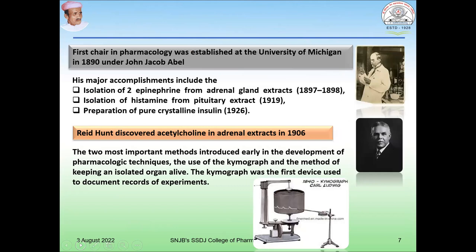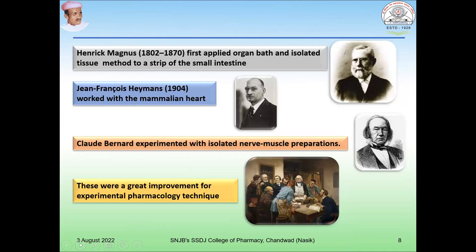The first chair in pharmacology was established at the University of Michigan in 1890 under John Jacob Abel. His major accomplishments include the isolation of epinephrine from adrenal gland extracts, isolation of histamine from pituitary extract, and preparation of pure crystalline insulin. Reid Hunt discovered acetylcholine in adrenal extract in 1906. The two most important methods introduced early in pharmacologic technique were the use of the kymograph and the method of keeping an isolated organ alive. The kymograph was the first device used to document records of experiments. Magnus first applied the organ bath and isolated tissue method to a strip of small intestine, and Claude Bernard experimented with isolated nerve muscle preparations, which were great improvements for experimental pharmacology techniques.